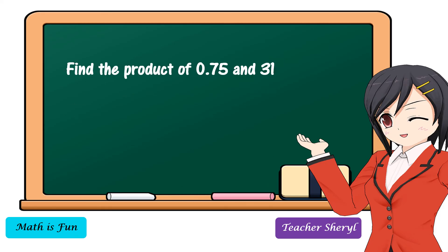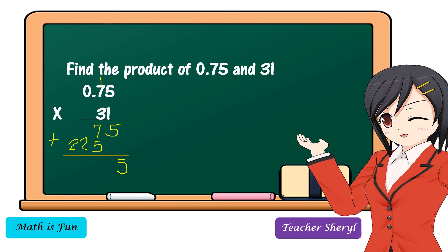Next example. Find the product of seventy-five hundredths and thirty-one. We're going to multiply as if multiplying whole numbers. One times five is equal to five. One times seven is equal to seven. Next, three times five is equal to fifteen — write five and regroup one. Three times seven is equal to twenty-one, plus one is equal to twenty-two. Then we're going to add the partial products. Bring down five. Seven plus five is equal to twelve — regroup one. One plus two is equal to three. Bring down two. We have two decimal places in our factors, so we're going to have two decimal places in our product as well.